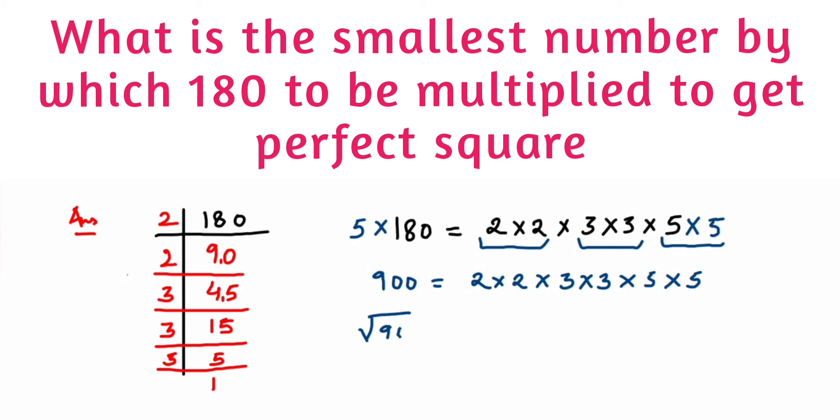Now when you're finding the square root of 900, you've got the pairs, right? From each pair, you should take one factor. From here I'll take 2, multiplied by 3, and from the last one I'll take 5. 2 times 3 is 6, 6 times 5 is 30.